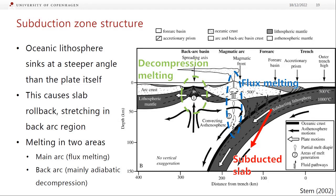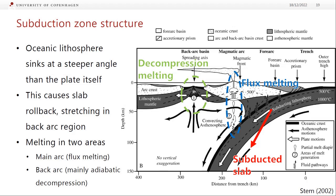Coming back to the subduction zone diagram: oceanic lithosphere is actually falling at a slightly steeper angle than the slab itself. Because it's falling more steeply, we can't have a gap, so the slab is rolling back — called slab rollback — and the arc above it moves with it. This causes stretching in the back-arc region. Overall in an arc, melting occurs in two main areas: flux melting underneath the main magmatic arc, and decompression melting similar to mid-ocean ridges in the back-arc region.